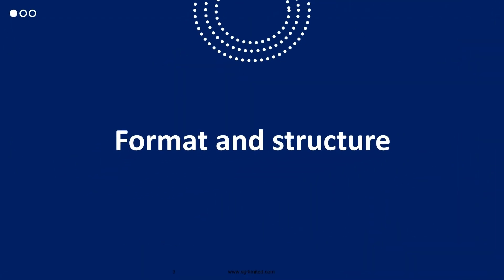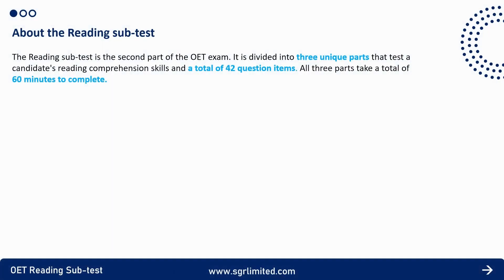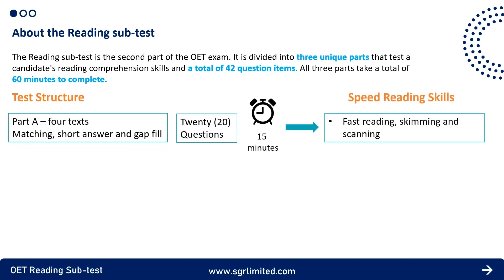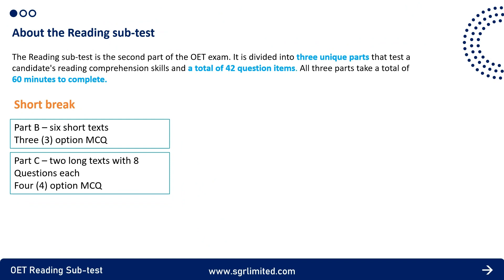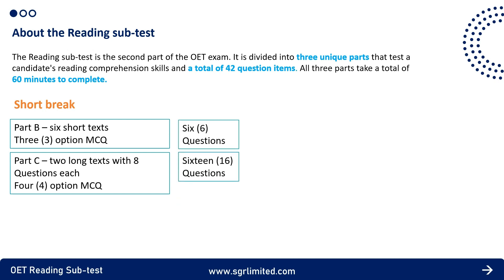Let's look at the format and structure of reading. Part A consists of 20 questions to be answered in 15 minutes. The second test is Parts B and C combined. Part B has six short texts with three multiple choice answer options. Part C has two longer texts with eight questions each and four multiple choice answer options. In Part B you answer six questions, while in Part C you have a total of 16 questions. You must complete both parts within 45 minutes.